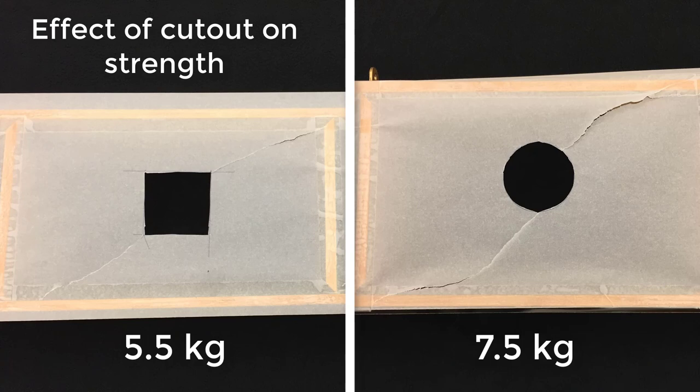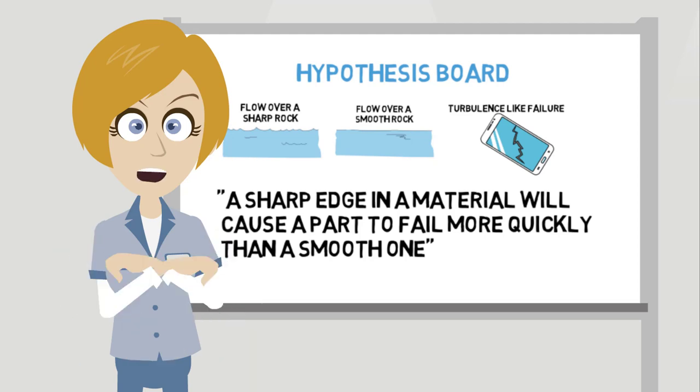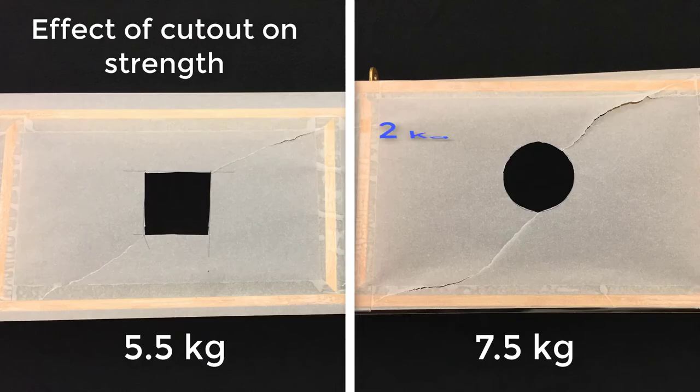So what can we learn from this? We hypothesized that the shape of a cutout affects its load-carrying capability, and we observed that the circular cutouts were able to withstand a higher load than the square cutouts, 2 kg more to be exact. Thus, our hypothesis was proven correct.